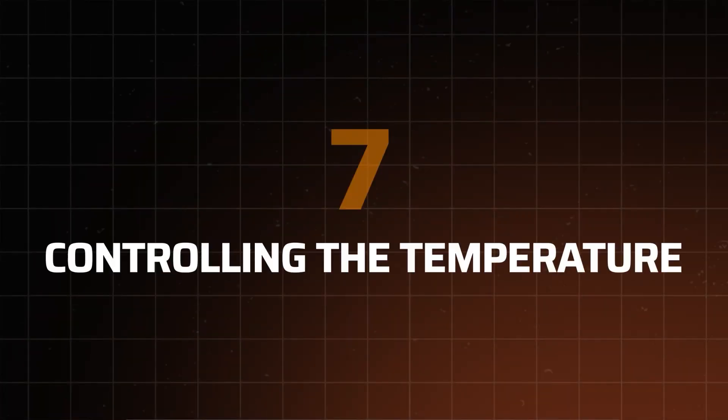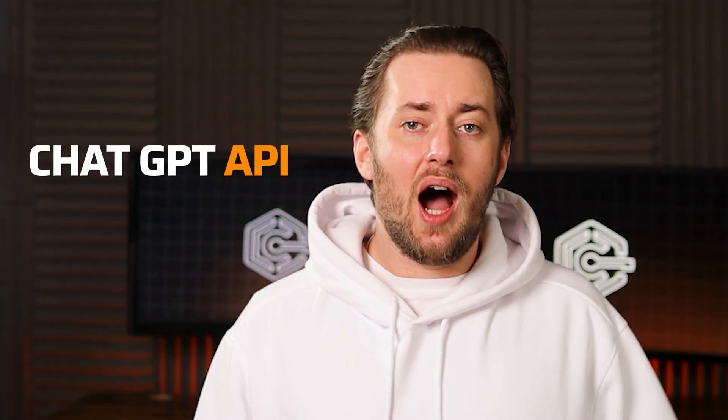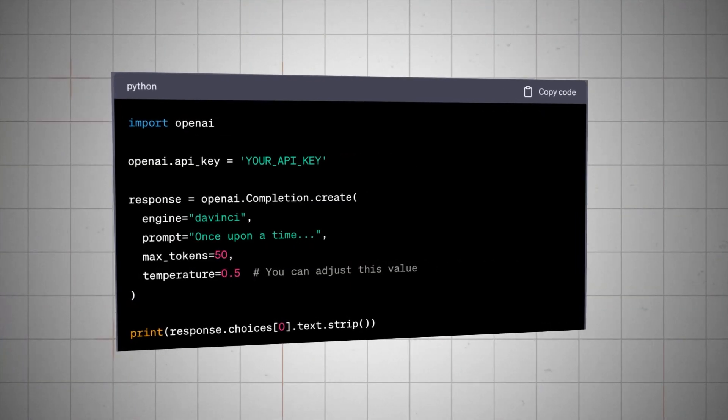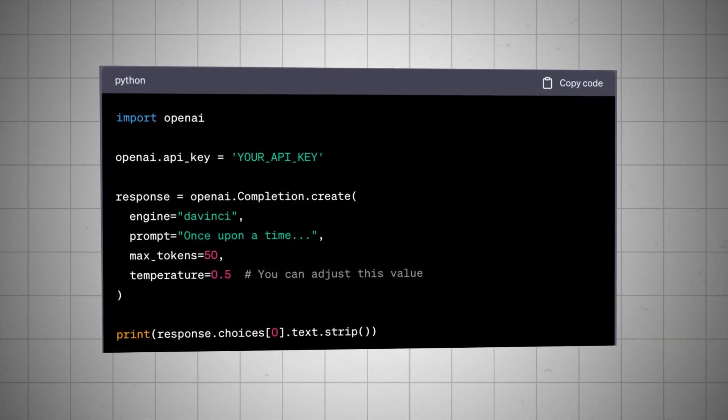Alternatively, one of the hottest ChatGPT tips right now is to set the temperature. This only works if you're using the ChatGPT API. It lets you include the temperature parameter, which controls how random or varied the generated text is.